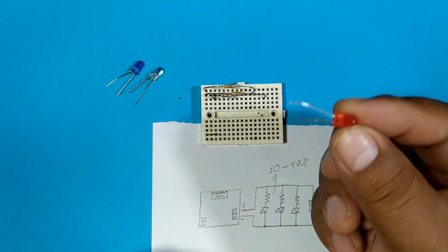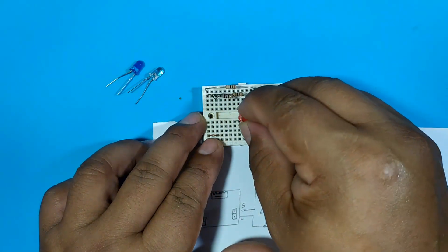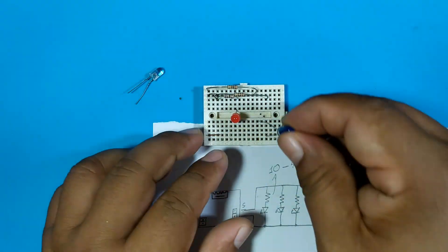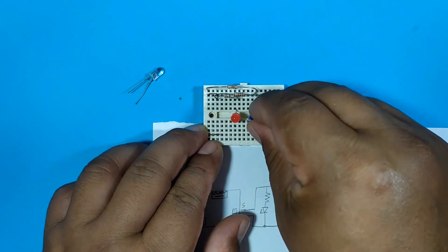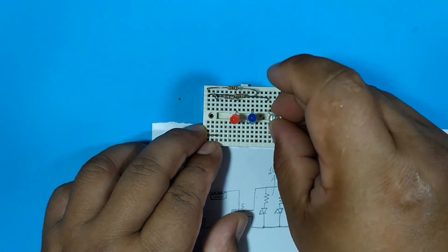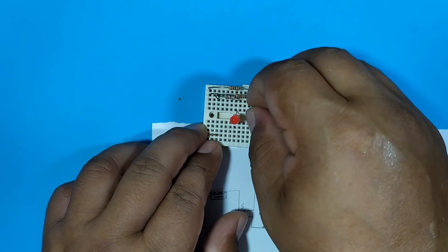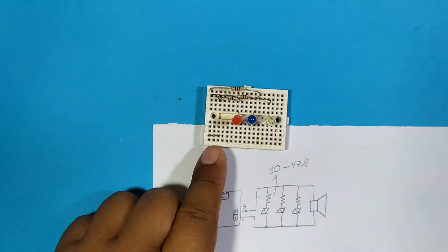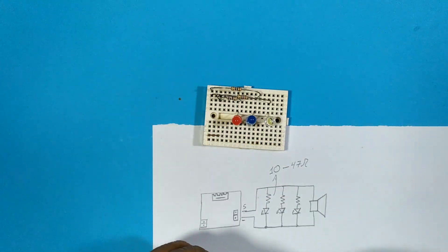First the red one. Then the blue one. Then the white one. We connect the negative to the three LEDs.